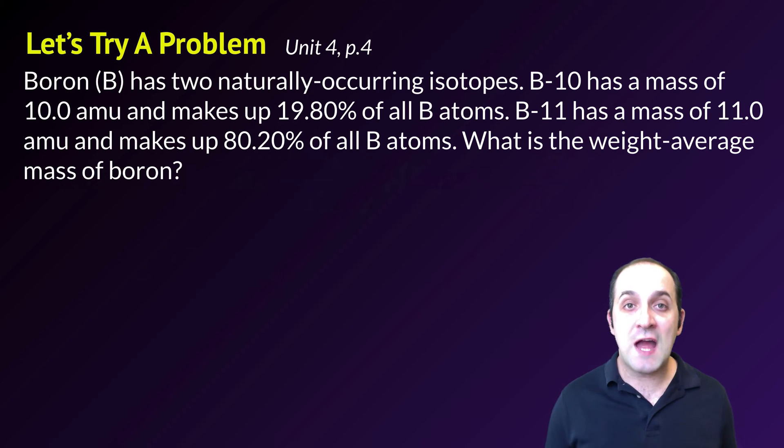So boron has two naturally occurring isotopes. Boron 10 has a mass of 10.0 atomic mass units and makes up 19.80 percent of all of the boron atoms. Boron 11 has a mass of 11.0 atomic mass units and makes up 80.20 percent of all boron atoms. What is the weight average mass of boron or the average atomic mass of boron?